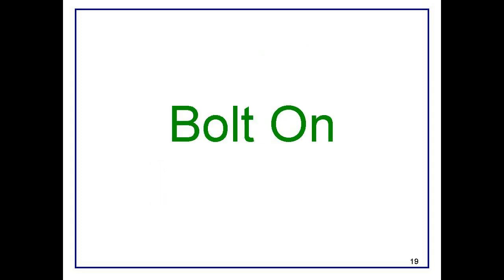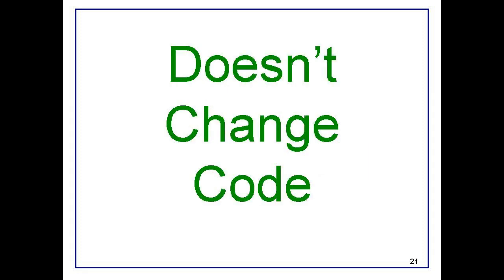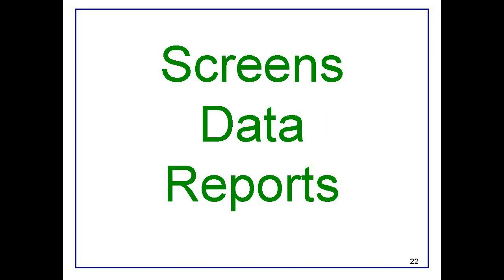The next possibility is that you may find an off-the-shelf application that does most of what you need. In this case you can think about extending the functionality of the application by building a bolt-on piece for it. A bolt-on piece is a small application that adds functionality without changing the code of the off-the-shelf application. It will probably have some screens, some data, and some reports, and it will connect to the backend of the commercial application.